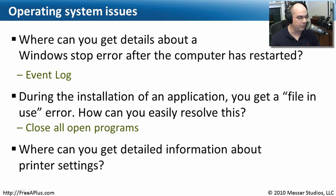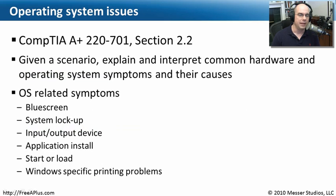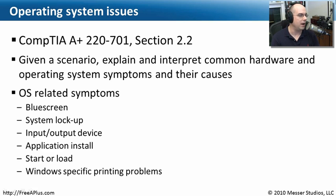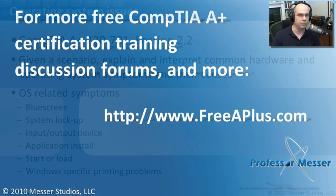Where can you get detailed information about printer settings? One of the easiest places is right in your printer properties — go through the tabs there to learn how that particular printer should be operating. That covers what we needed to know for CompTIA A+ 220-701 Section 2.2 on operating system issues, including blue screens and lockups, I/O device problems, application installations, starting or loading applications, and resolving printing problems.